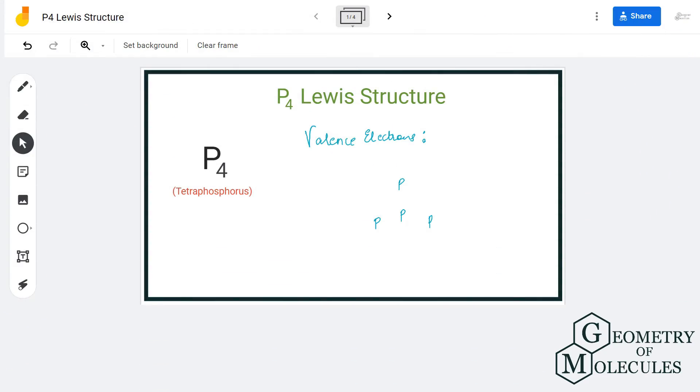Hi guys, today in this video we are going to look at the Lewis dot structure for P4, which is elemental phosphorus. To understand its structure, we will use a different approach here, which would be different from the way we approach other molecules, because here it is made up of a single type of atom, that is phosphorus.